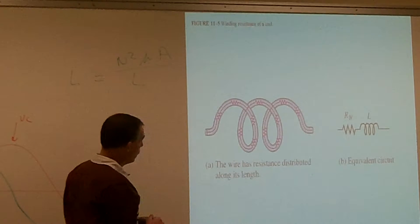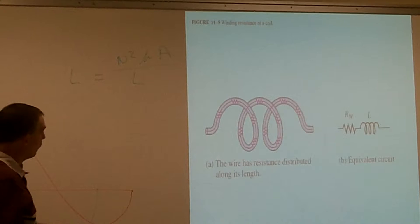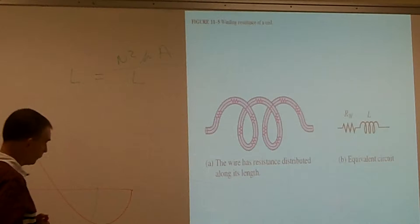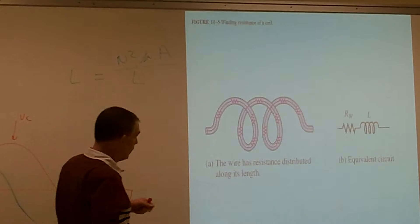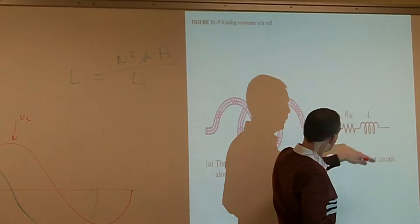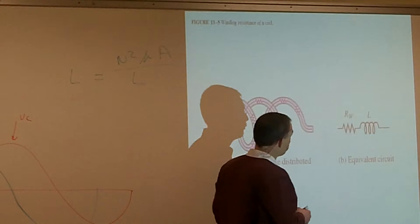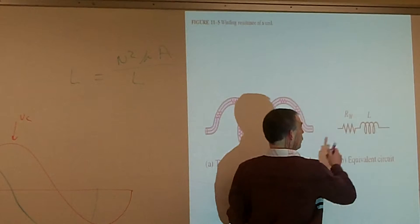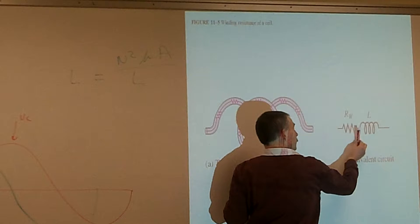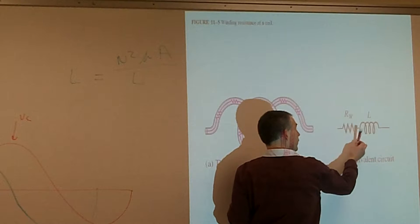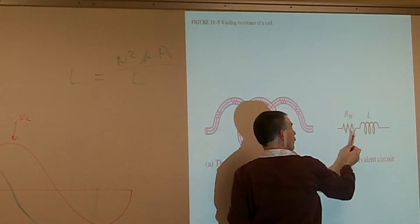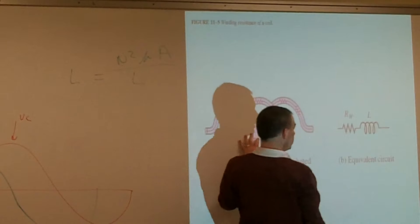All of our wire that we wrap these inductors around - as we increase the length of it, we keep adding resistance to it. That resistance becomes part of our circuit. It's an unwanted thing we don't want to have - it changes the quality of our inductor, but we have to deal with it. That's our resistance of the windings, and it gets brought into being put in series with our inductor.